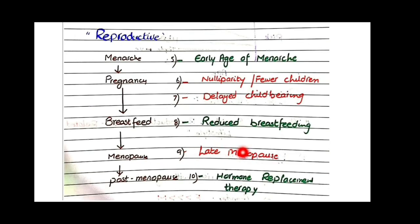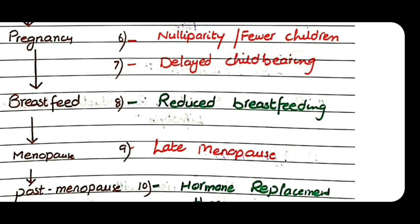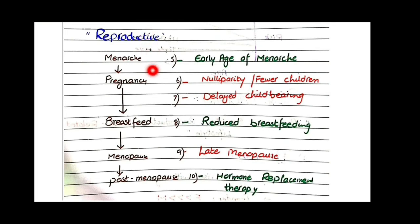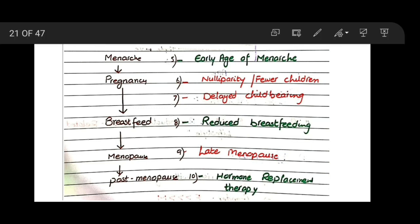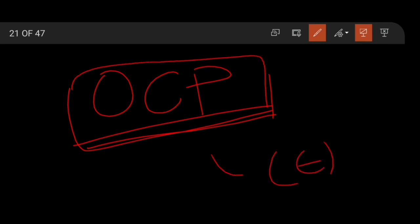Late menopause is a risk factor because the ovarian cycles stop at a later age, meaning more estrogen is released over a longer period, increasing breast cancer risk. In the postmenopausal period, use of hormonal replacement therapy containing estrogen also increases the risk of breast carcinoma. An important point — often asked in MCQs — is that oral contraceptive pills, even though they sometimes contain estrogen, have not been shown to increase the risk of breast carcinoma.